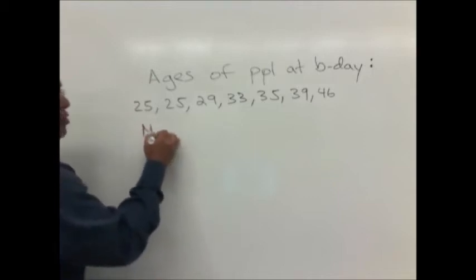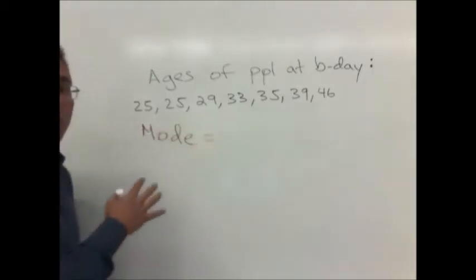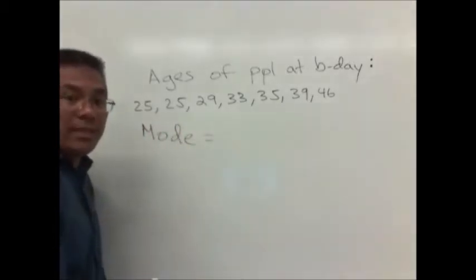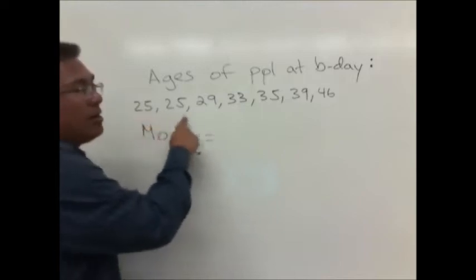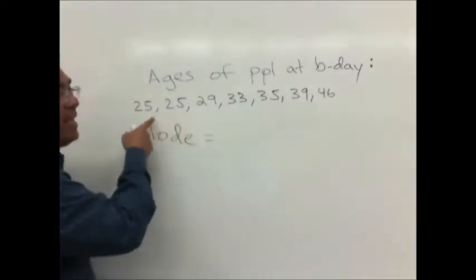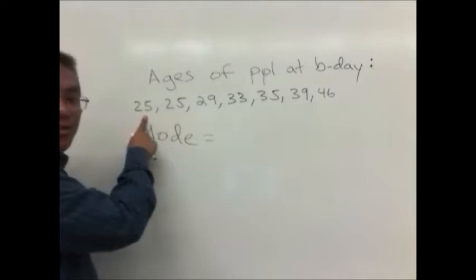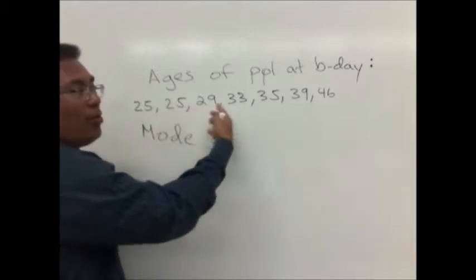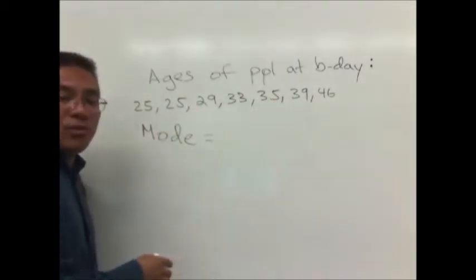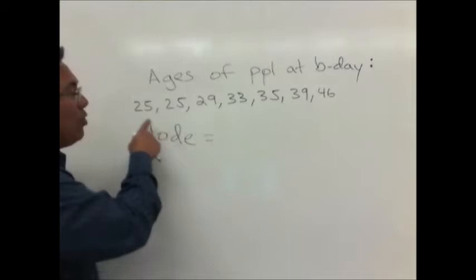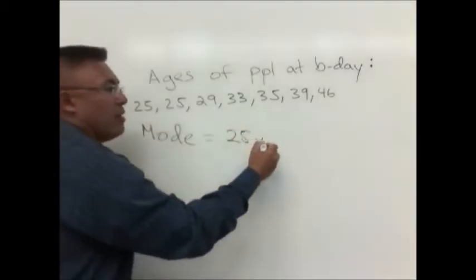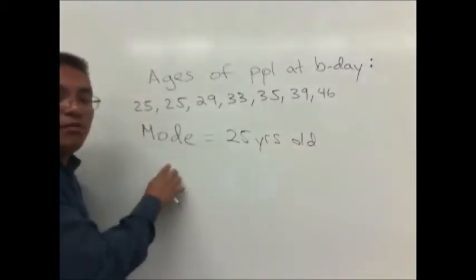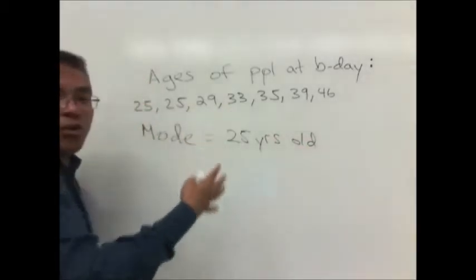So let's talk about mode first. Mode refers to the value that occurs most frequently. If we take a look at our survey results, we see that 25 years old occurs most frequently. Two people that we surveyed were 25, and no other age occurs more than once. So 25 years old is the mode for this data.